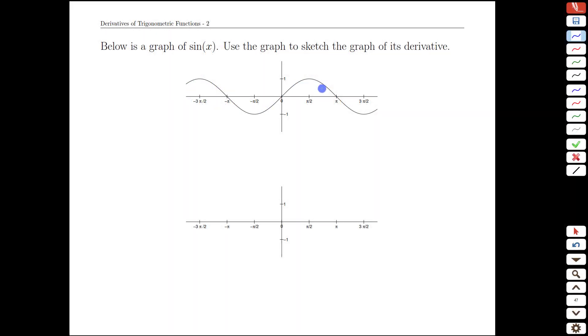Here is the graph of sine of x. Goes up to one, goes down to negative one, has its zeros at zero, pi, two pi, and so on. Now remembering what we mean by the relationship between the graph of f and its derivative, if we take a look at this graph and look at slopes, we're going to see values on this function here.